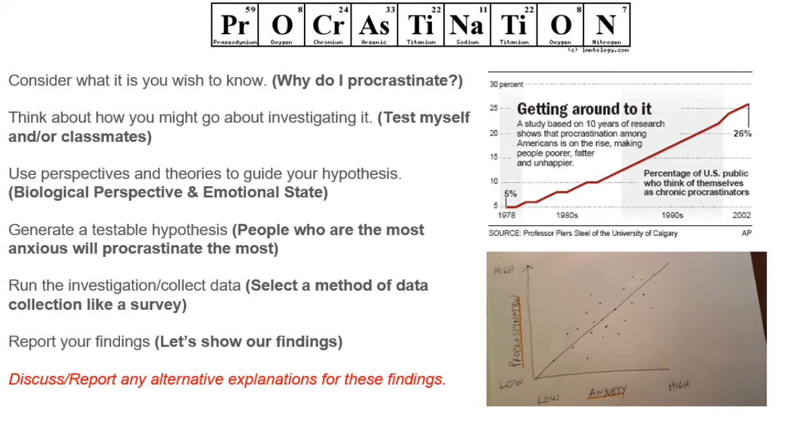We now have to generate a testable hypothesis. Again, not an educated guess, but a very specific prediction. People who are the most anxious will procrastinate the most. That's a good claim. That's a possible testable hypothesis. But again, we won't know that specifically as to whether or not it can be tested until we can operationally define the variables we're interested in. And if we can do that, then we'll run an investigation and collect data. That means we'll select a method or methods of data collection, like for instance, maybe a survey. And finally, we'll report our findings. We'll show the world our findings. And at the very end, we'll discuss and report any alternative explanations for these findings.